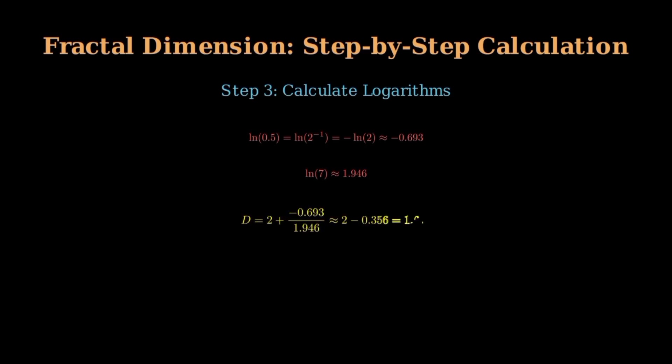Therefore, d equals 2 plus negative 0.693 divided by 1.946, which equals 2 minus 0.356, giving us approximately 1.644.